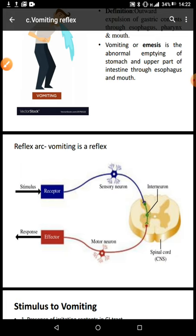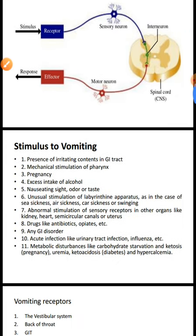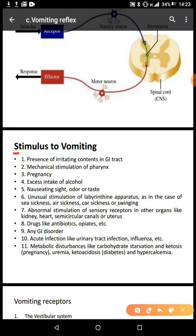Now let's describe the stimuli to vomiting. There are many factors that stimulate vomiting: presence of irritating contents in the GI tract, mechanical stimulation of the pharynx, pregnancy, excess intake of alcohol, and nauseating sight, odor, or taste.